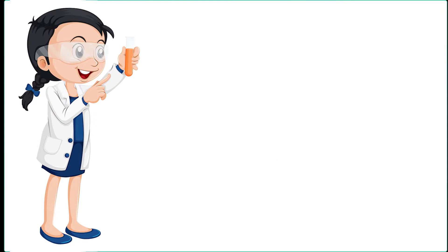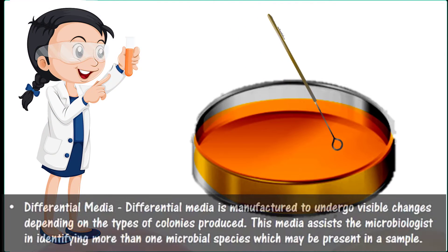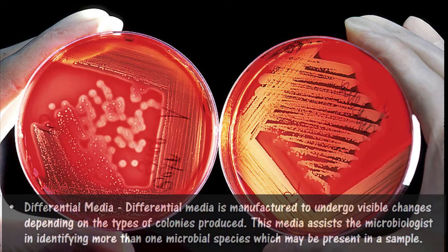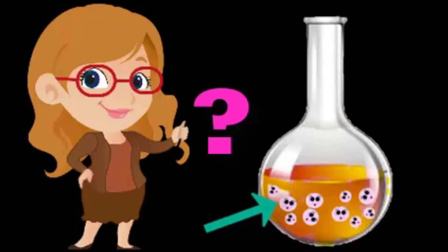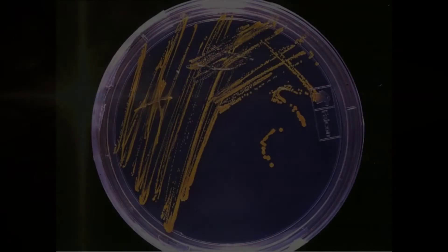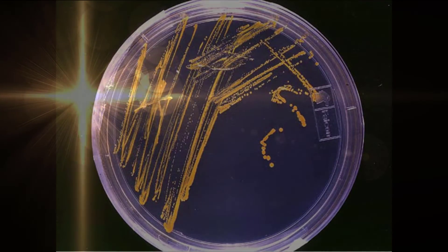Differential media is manufactured to undergo a visible change depending on the types of colonies that you produce. This media assists microbiologists in identifying microbial species which may be present in a sample.